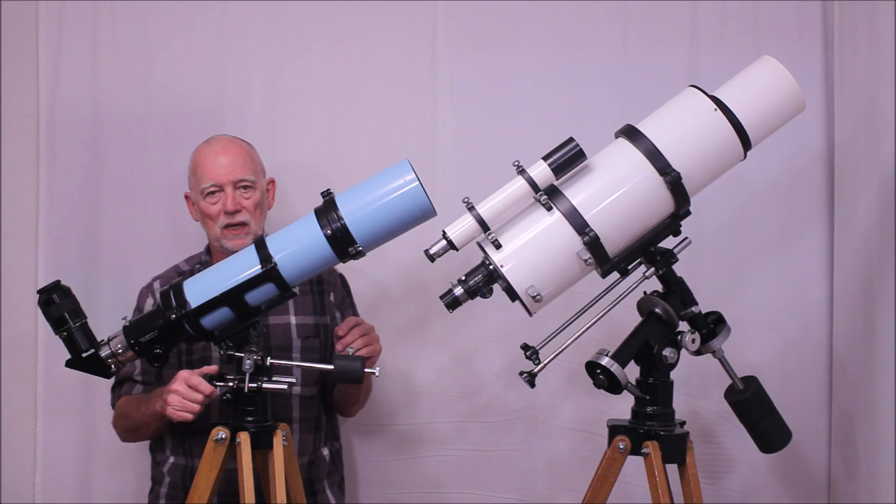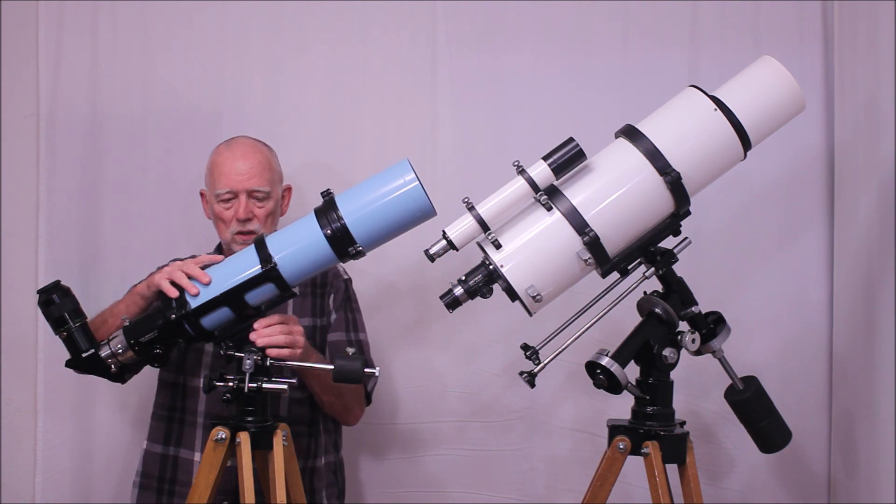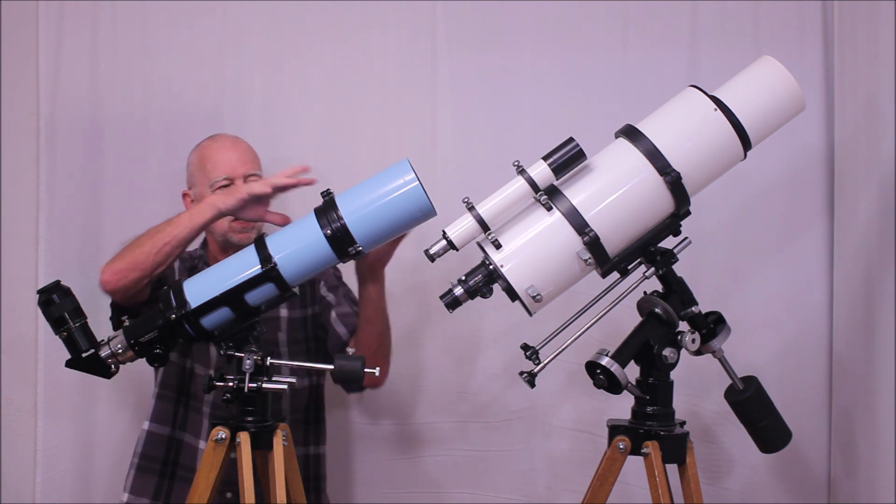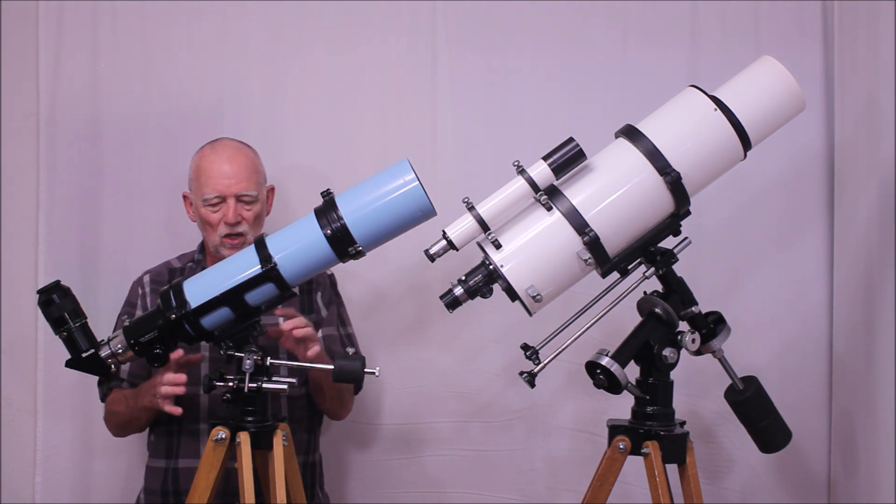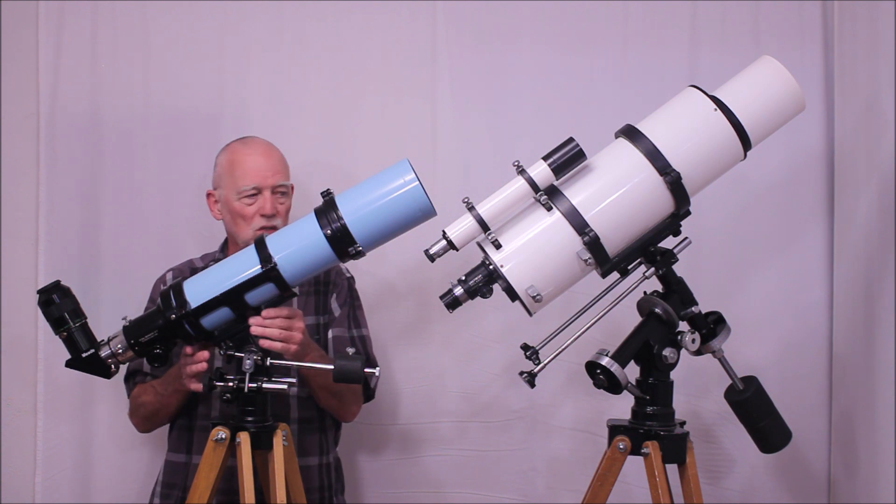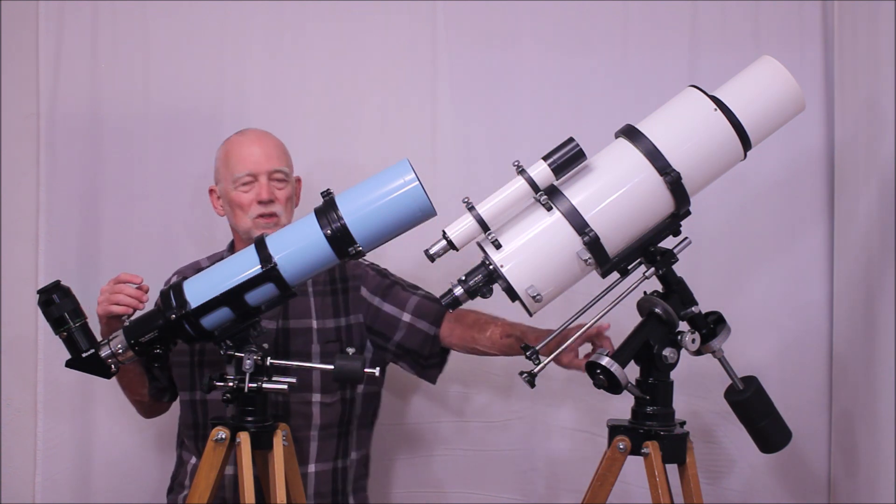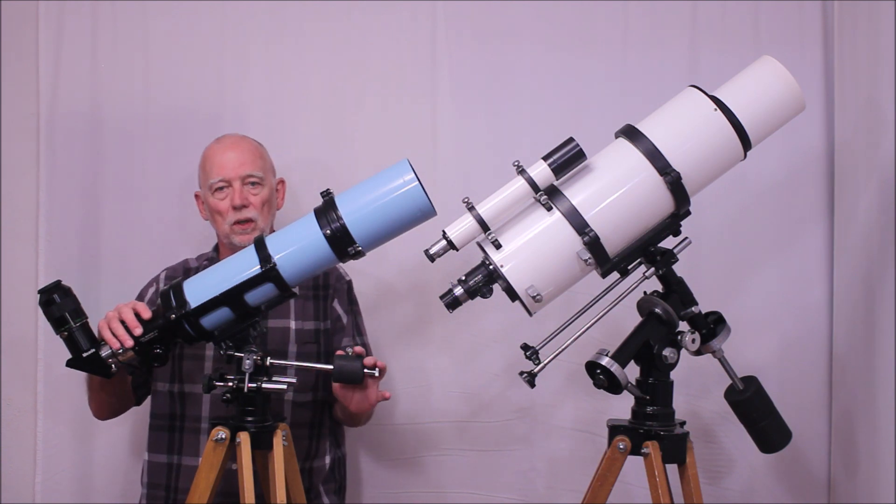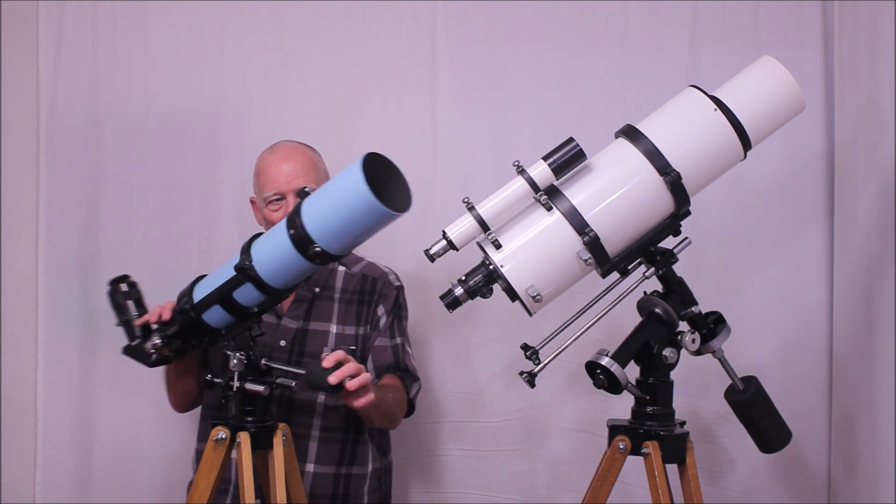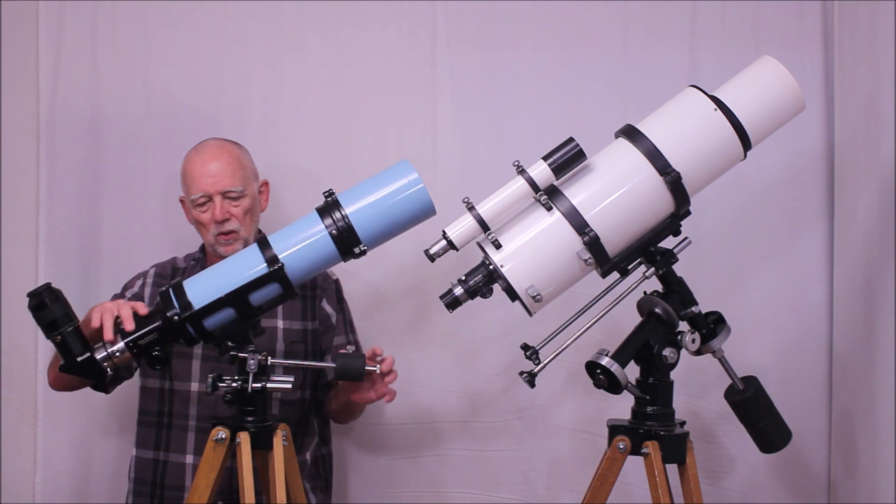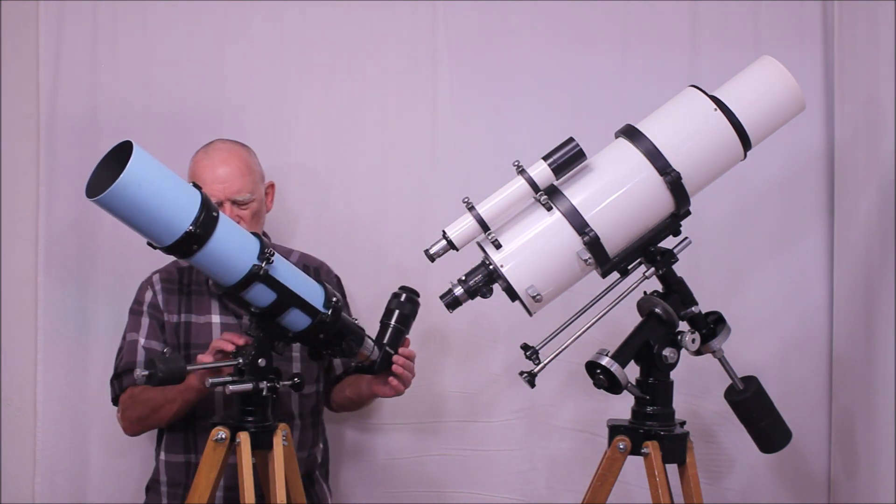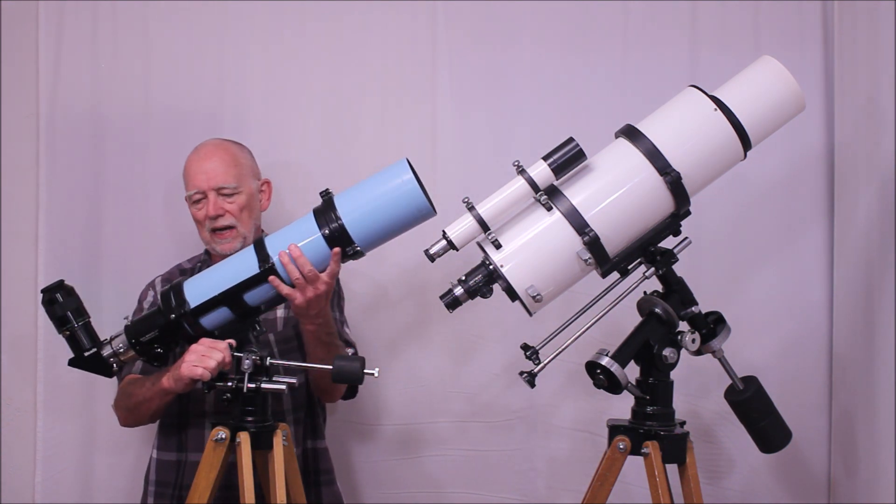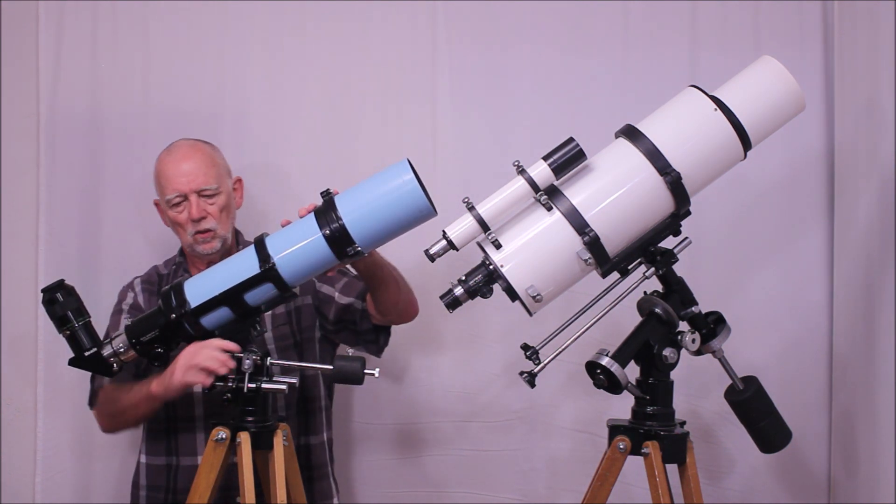This has a simpler mount, an Altaz mount. Although you could, this is all Nihon Seiko here essentially. The focuser, everything else, pretty much Nihon Seiko. You could put this telescope on the three inch mount, the same mount that this is on. And that would make it a nice equatorial telescope. But this telescope is nice, easy to operate, beautiful.